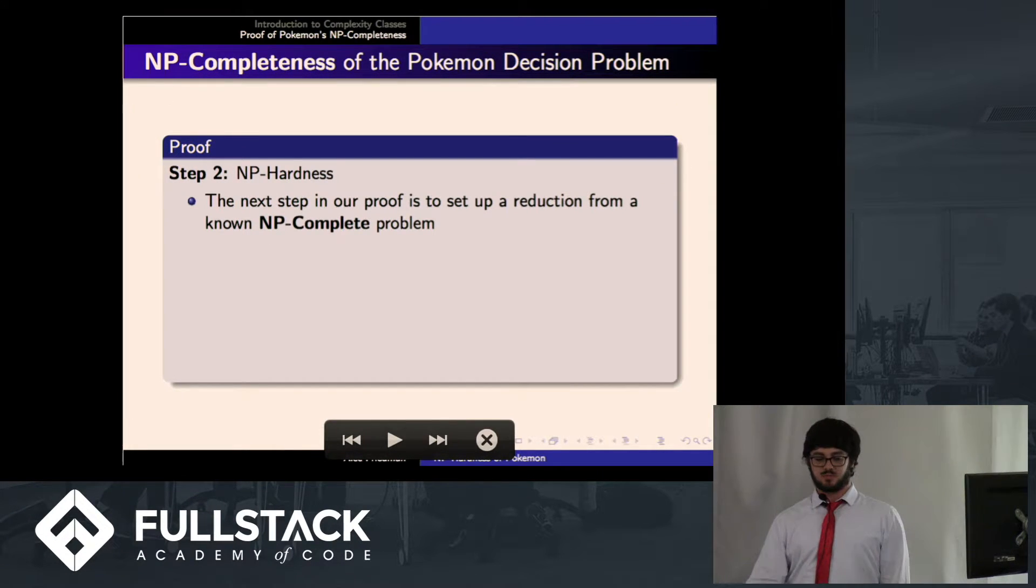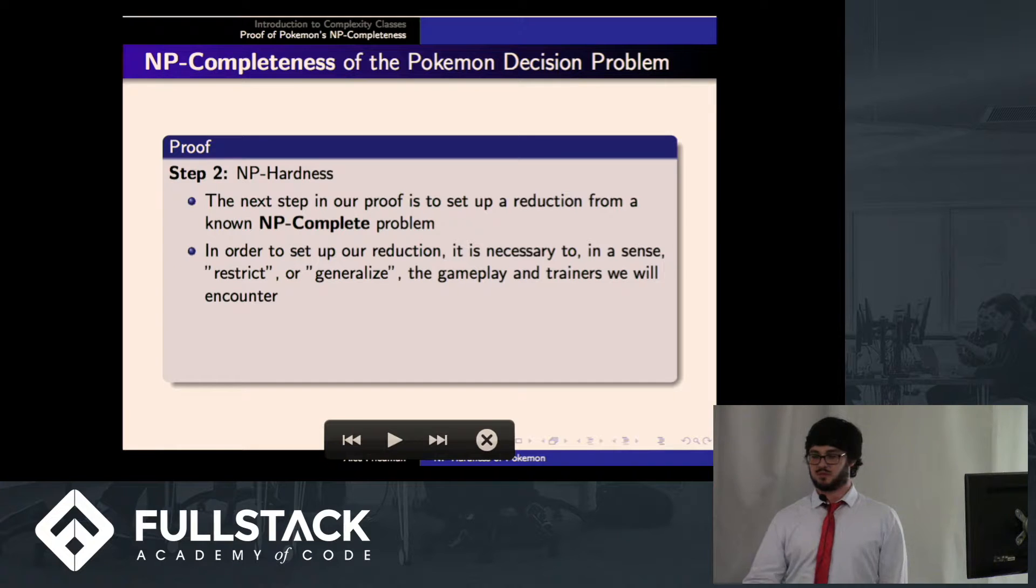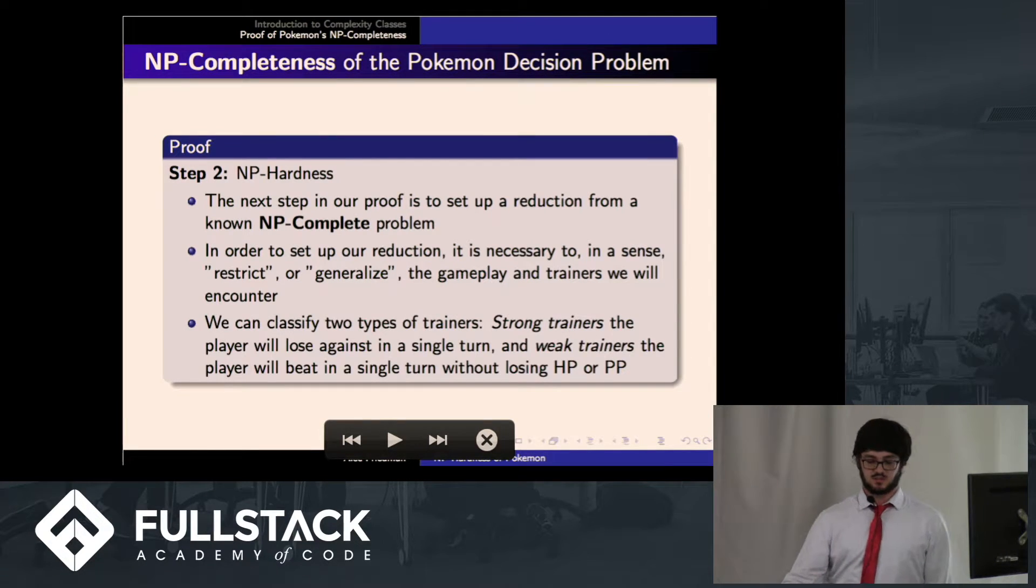The next step in this proof is to set up a reduction from a known NP-complete problem. The NP-complete problem that we're going to be dealing with is called 3CNF-SAT, but before we talk about that, we're going to have to restrict or generalize the gameplay in some ways, which is basically instantiating some specific instance. So we're going to classify two types of trainers. We're going to have strong trainers, which if you walk up to a strong trainer, or you walk into the line of sight of a strong trainer, you will lose in a single turn. And we're going to have weak trainers. If you walk up to a weak trainer, you will win in a single turn without losing any HP or PowerPoints. If anyone is interested in how exactly that is set up, I have a link at the end of this with the specifics.